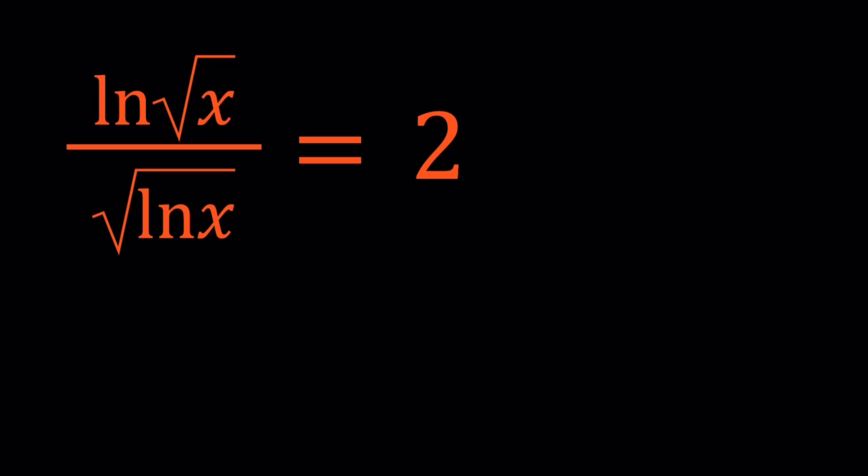We have ln square root of x divided by the square root of ln x equals 2, and we're going to be looking for x values.